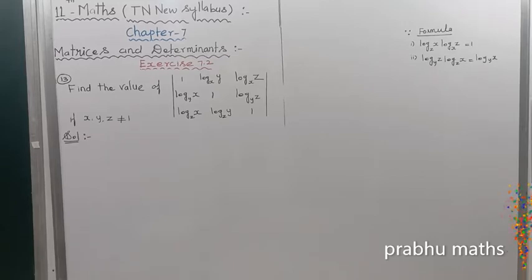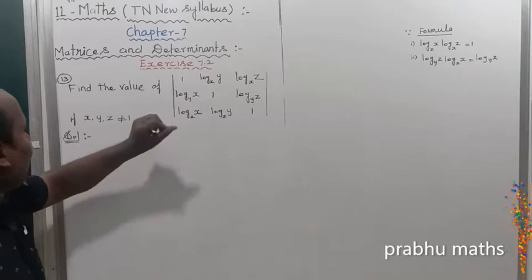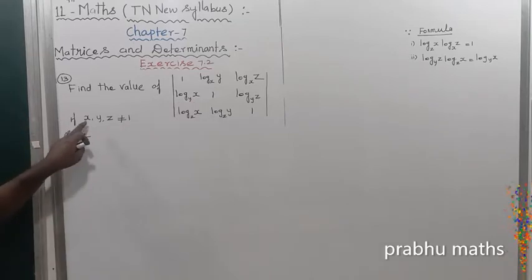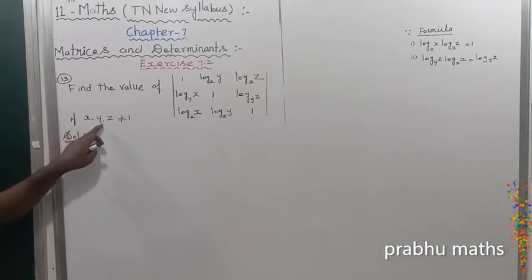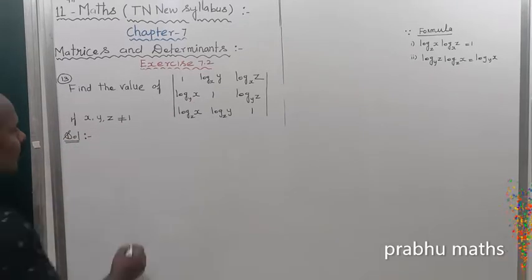X is 7.2, 13th sum. Find the value of the determinant. Next, if x, y, z is not equal to 0.